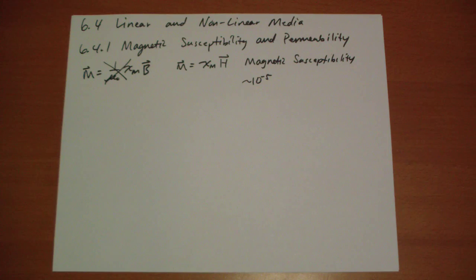And materials that obey this are called linear medium. Oh, by the way, there is a point at a very strong magnetic field where materials don't behave this way anymore. They can only take so much magnetization.